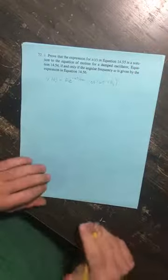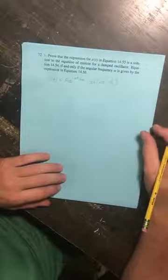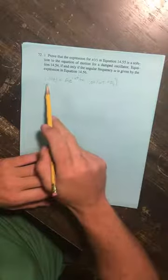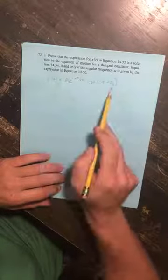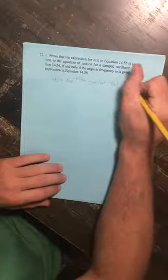Well, where does this come from? That is the purpose of this problem number 72, and I do want to provide a little background information because we are going to set out to prove that this expression, the kinematic equation for a damped oscillator, solves the equation of motion that we get by applying Newton's laws to a damped oscillator. So this is equation 14.55.